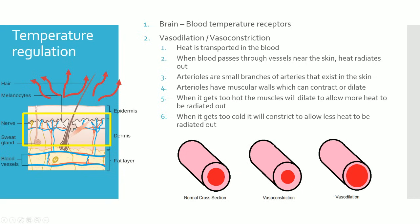One main way the skin is involved in temperature regulation is through vasodilation and vasoconstriction. Arterioles have muscular walls that can either contract or dilate. When it gets too hot and we need to release more heat, the arterioles dilate — more blood flows through them, more heat radiates out through the skin, and we lose heat, which is what we want.